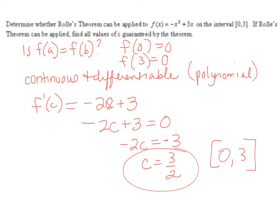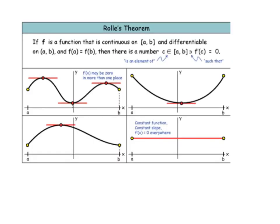Now, once again, this whole thing is the answer because it asks for all those parts. The answer is not just C equals three halves. The answer includes verifying that f of a equals f of b and all of that. All of this is the answer. So here's another graphic illustrating what it would look like if you could apply Rolle's theorem.